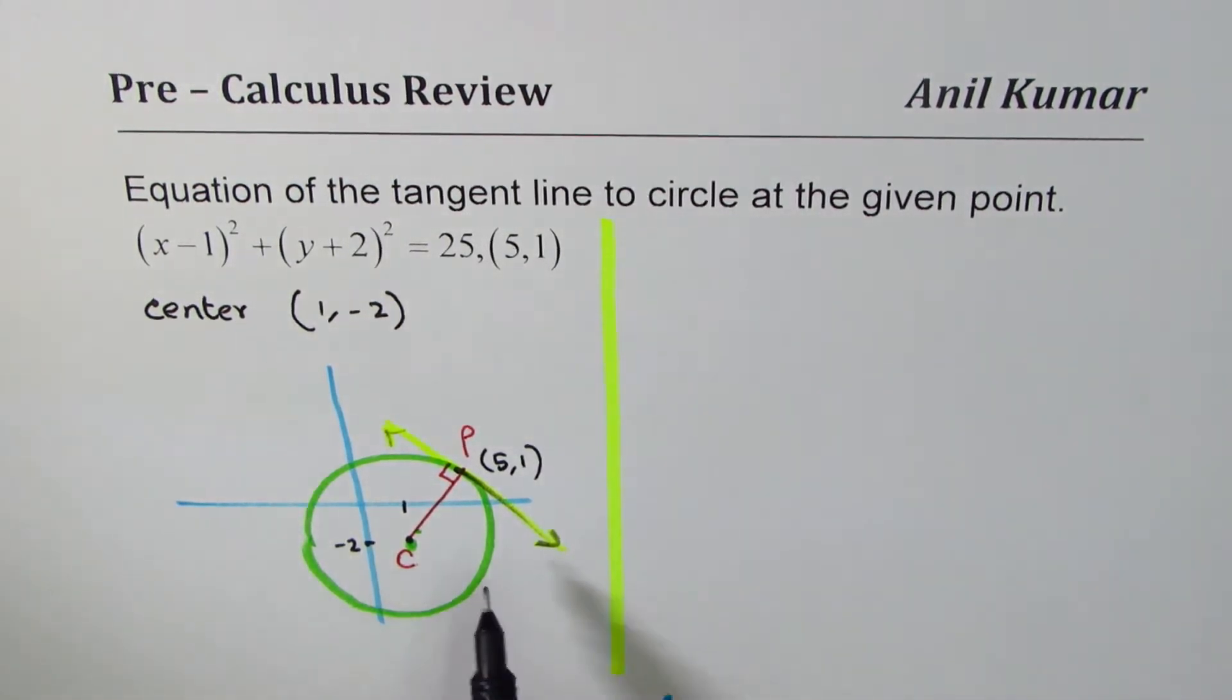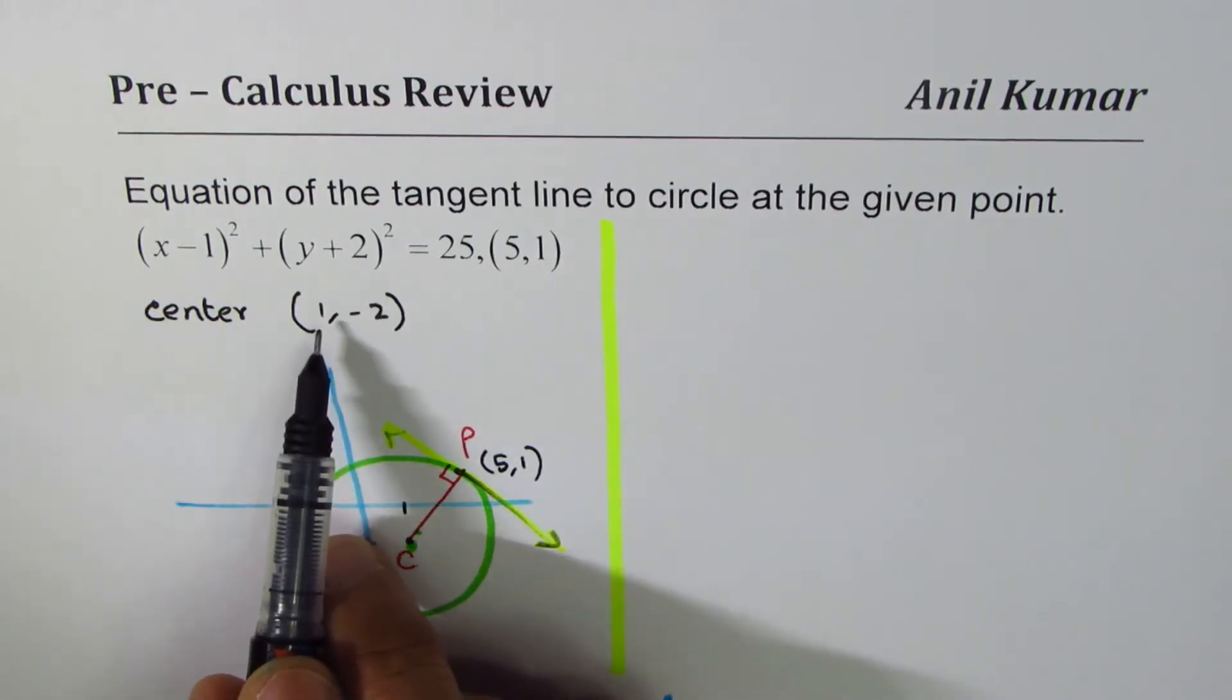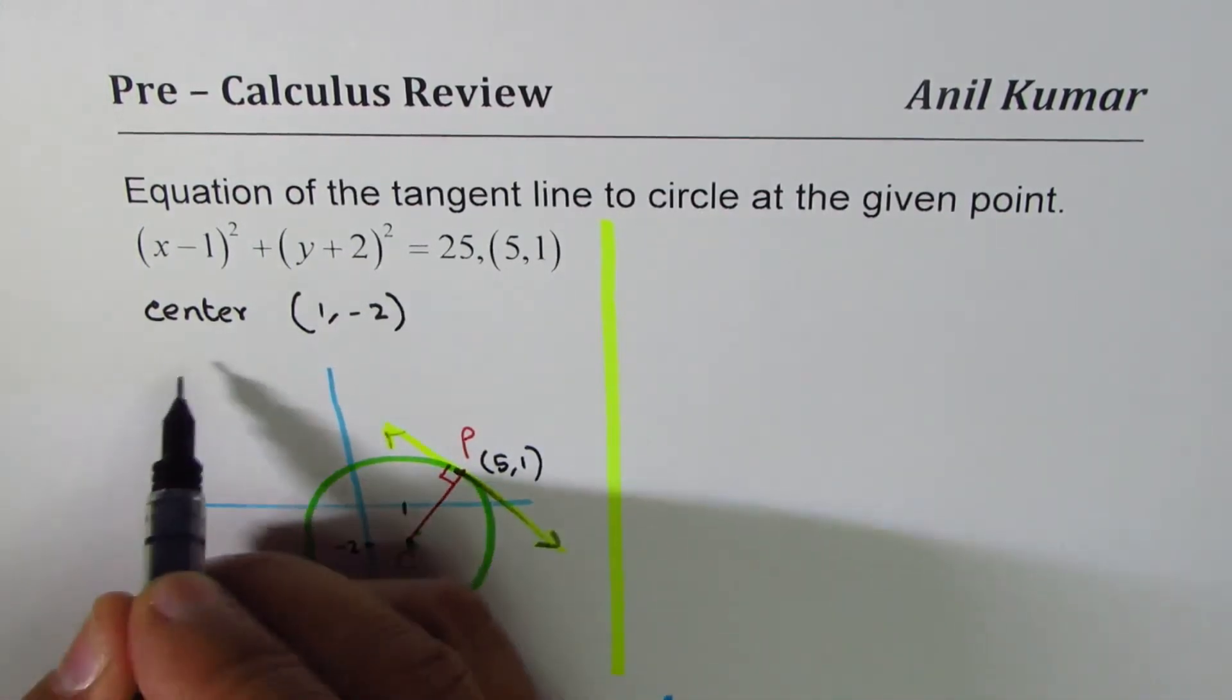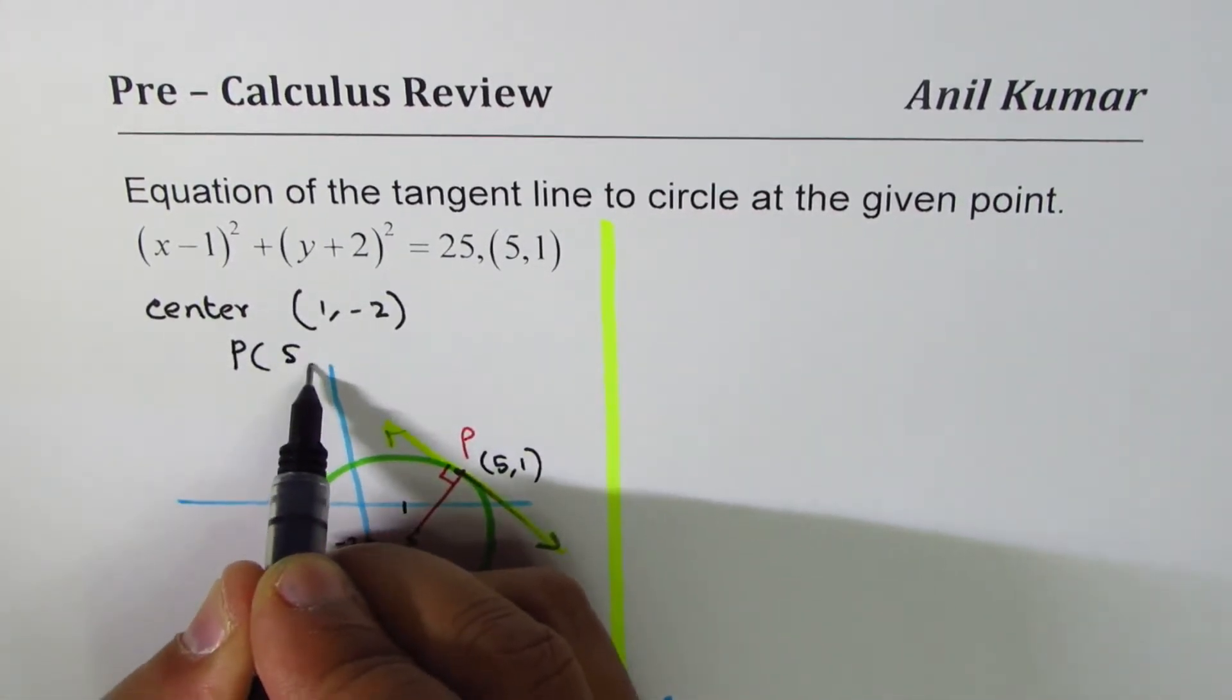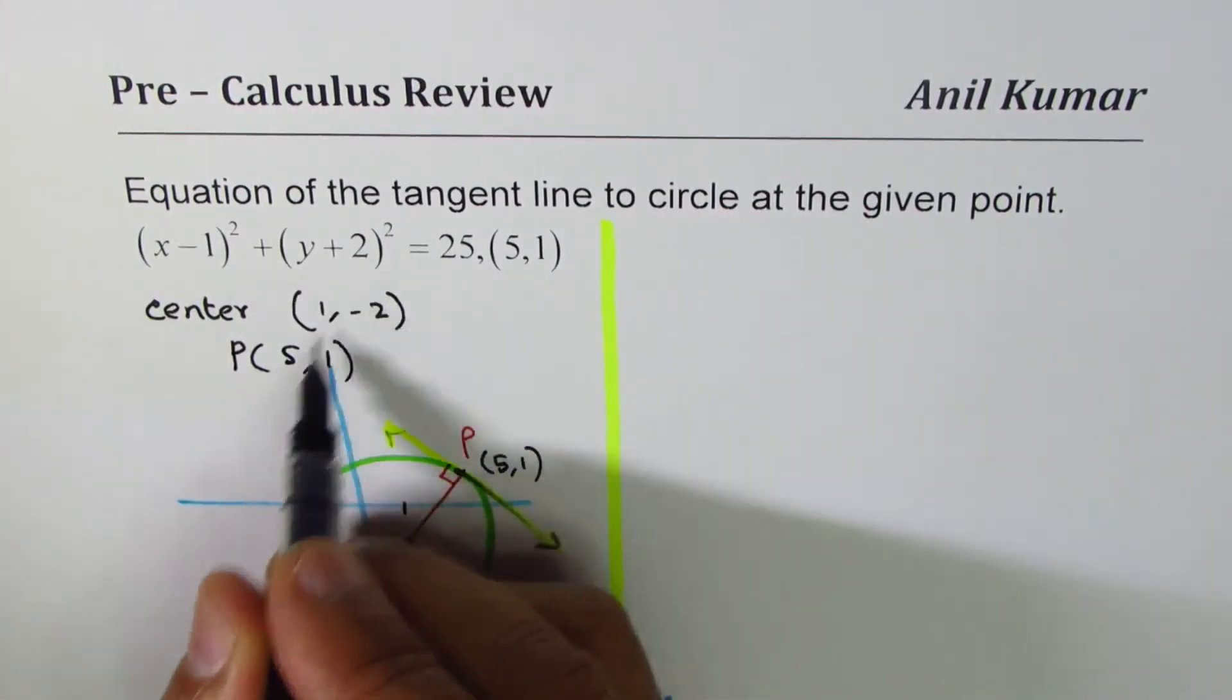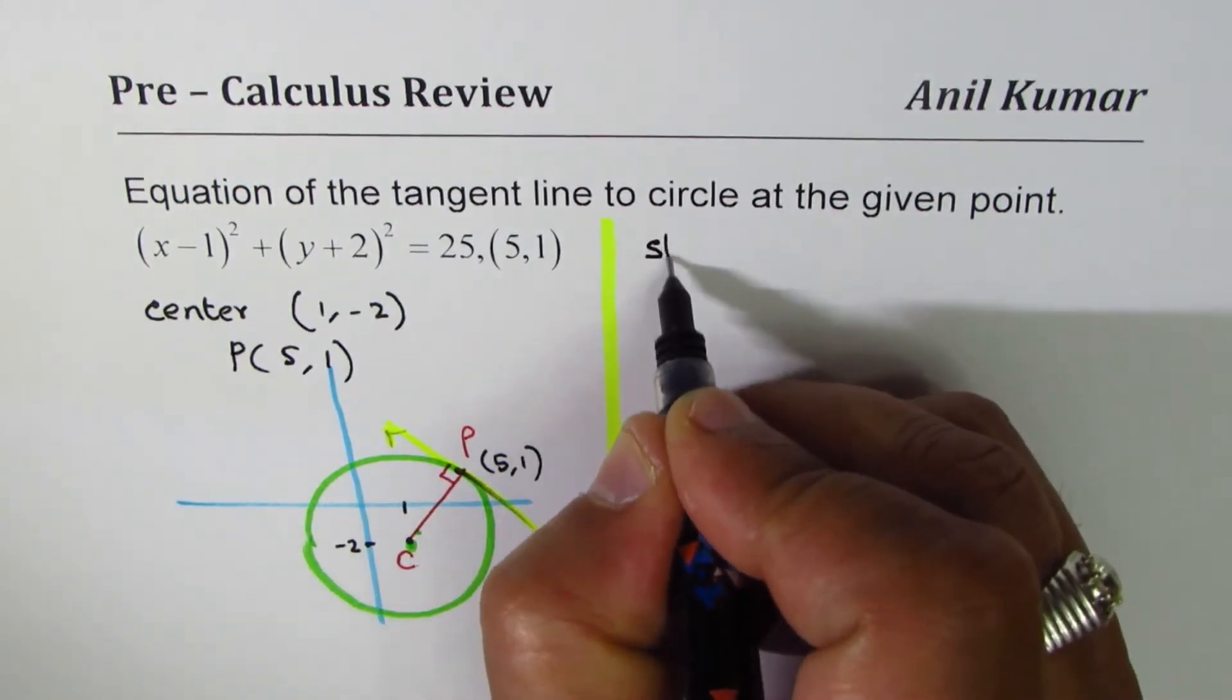How to find the equation of the tangent line? So first thing is we identify what the center is. Center is at (1, -2). And the point P given to us is (5, 1). So using center C and the point P, we can find the slope.